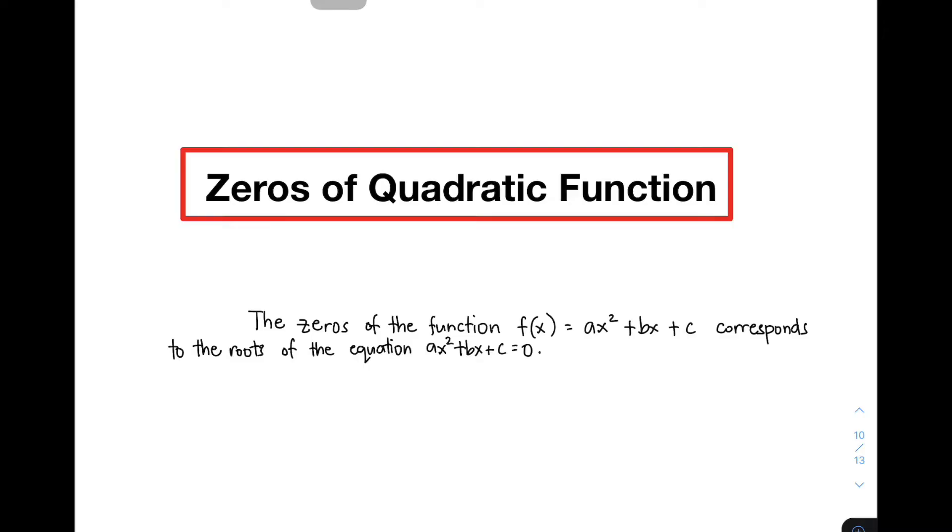By the way, the zeros of the quadratic function f(x) = ax² + bx + c corresponds to the roots of the equation ax² + bx + c = 0. In other words, it is just an easy way for us to find zeros of a quadratic function because if you know how to solve a quadratic equation, you can easily get the zeros of a quadratic function.